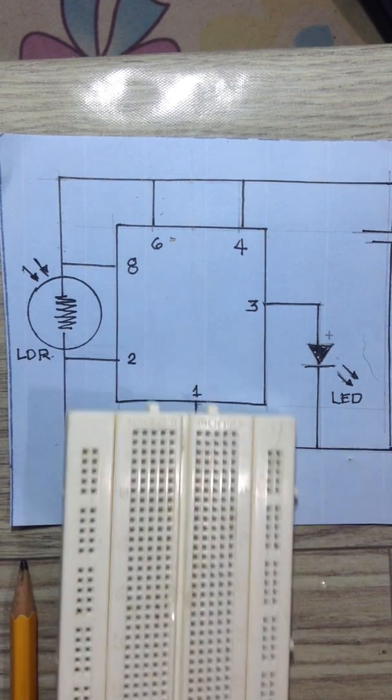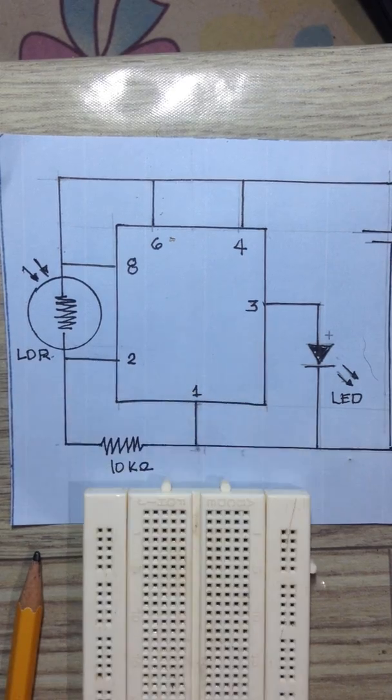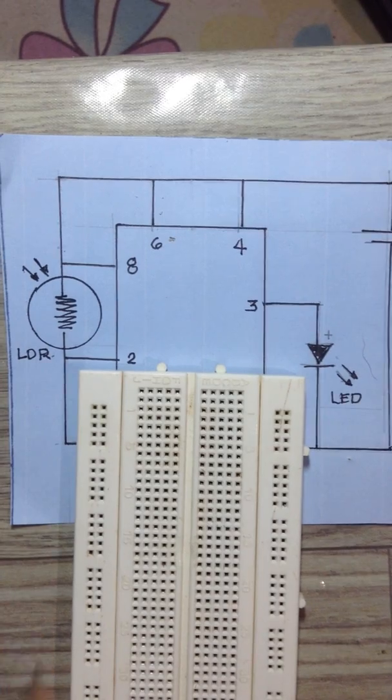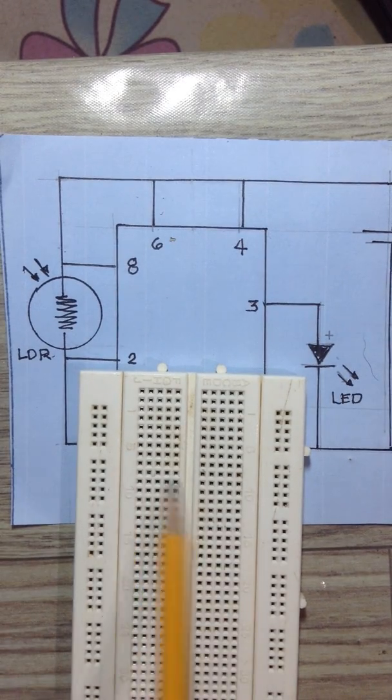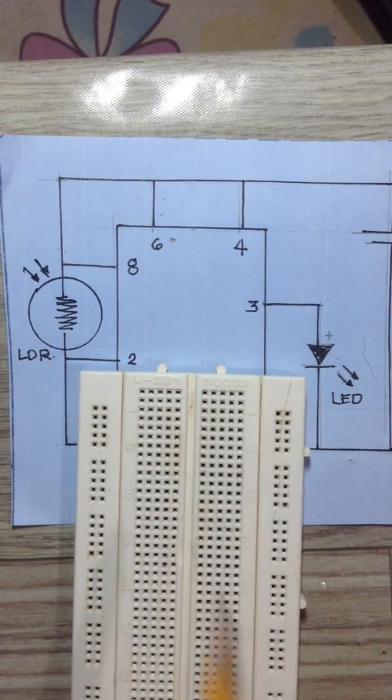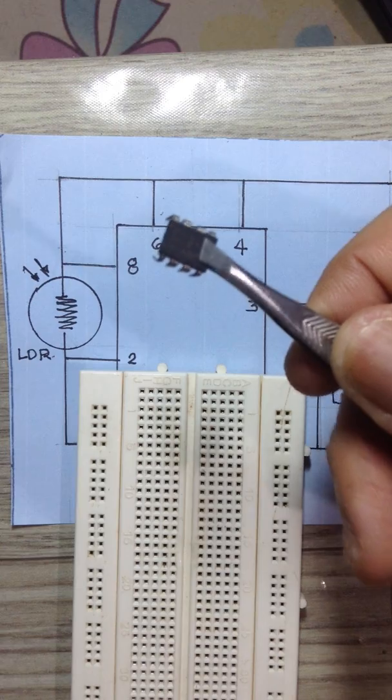This is how the circuit works. We're going to use the breadboard and of course the 555 timer IC. So what are the materials? Here's the circuit. Of course the breadboard.